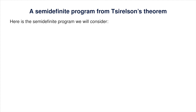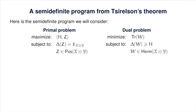H is used to define the primal objective function, and it is the only part of the SDP that depends on the non-local game G. Here is the semi-definite program for the entangled bias. We immediately see that strong duality holds and optimal values are always achieved in both primal and dual by Slater's theorem: taking Z equal to the identity yields a strictly feasible primal solution, and taking W to be a sufficiently large scalar multiple of the identity yields a strictly feasible dual solution.